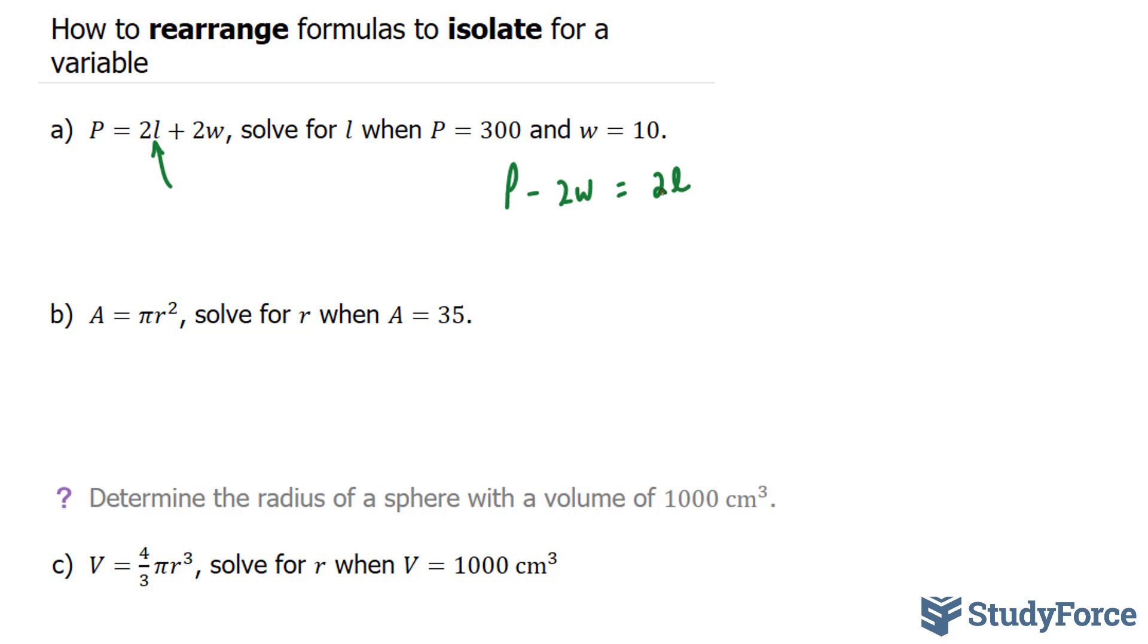Our next step is to get rid of this 2. Now to get rid of this 2, you need to divide both sides by 2. And if you do that, the 2's cancel out.